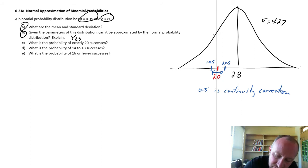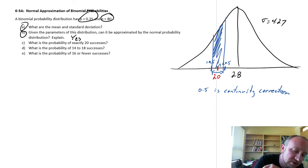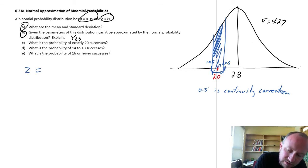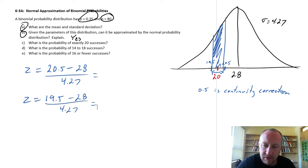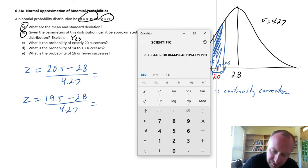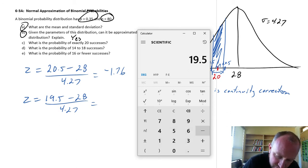Now we just have to find the area under the curve between 19.5 and 20.5. We calculate the corresponding z-scores: for 20.5, that's (20.5 minus 28) divided by 4.27, which is negative 1.76. And for 19.5, that's (19.5 minus 28) divided by 4.27, which is negative 1.99.